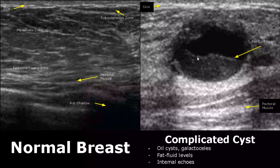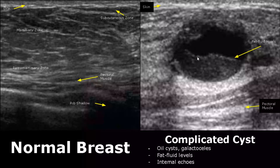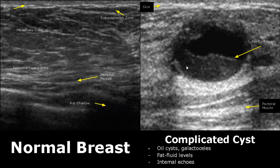A complicated cyst will have fat-fluid levels and internal echoes. The low-density fluid is at the top and the high-density fat is at the bottom. These cysts may resemble malignant lesions, which is why a follow-up is needed.